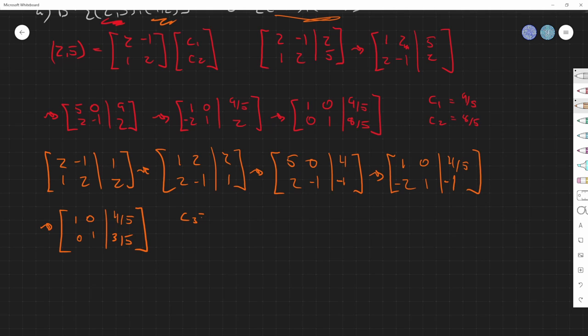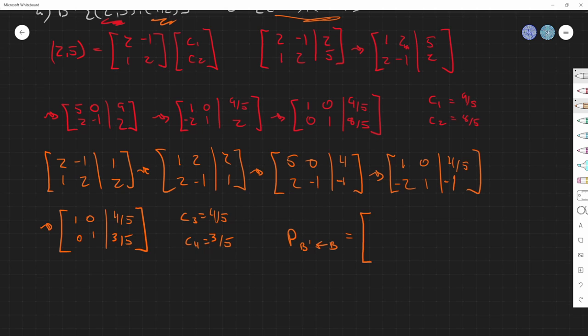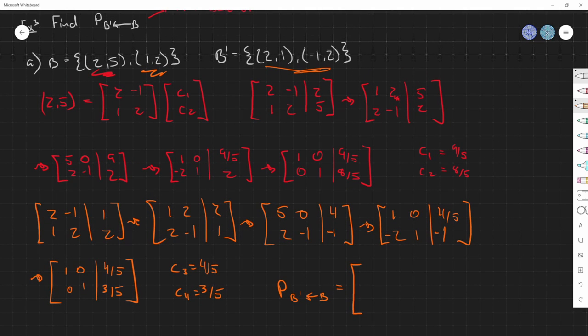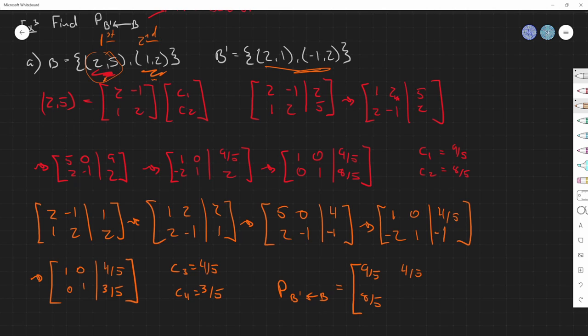And so that is our C3, 4 fifths, and C4, which is our 3 fifths. And so our change of bases, our P, what is it from? B to B prime will be. Now this part is important. This part is important because order does matter. Order makes a difference. Because we have it's written as 2,5 and 1,2. This is going to be first, it's going to be second. So whatever we found in the first one is going to be on the first column, which would be 9 fifths and 8 fifths. And then the other one would be 4 fifths and then 3 fifths. So order does matter. And so this is going to be our change of bases.